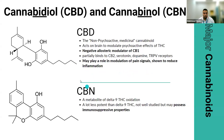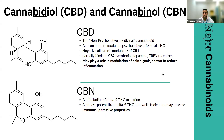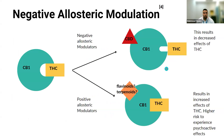CBN is another cannabinoid that is relatively studied. It is a metabolite of delta-9-THC — when we consume THC, our body breaks it down and can form CBN. Some studies show it can possess immunosuppressive properties.